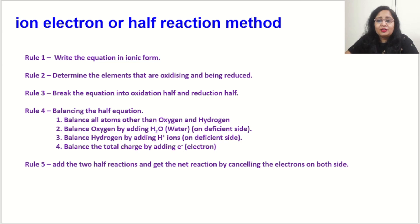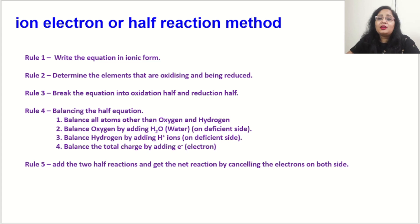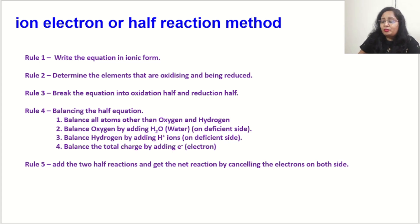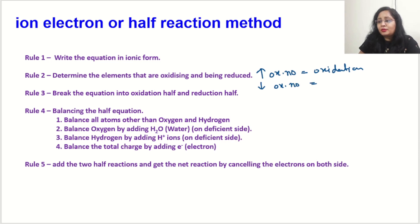In the ion electron and half reaction method, there are some rules. The first rule is to write the equation in ionic form. The second step is to determine the elements that are being oxidized and reduced. To determine this, we find the oxidation number of elements and see which element's oxidation number increases — that is oxidation — and which decreases — that is reduction.